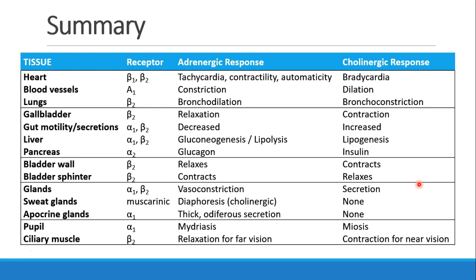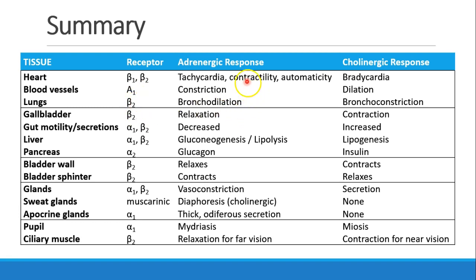This chart shows a number of different tissues and how the autonomic nervous system interacts with them. We see the heart, which has mostly beta receptors; the blood vessels, which mostly have alpha receptors; and the lungs, which have beta receptors. We can see how the adrenergic response and the cholinergic response tend to be opposite of each other.